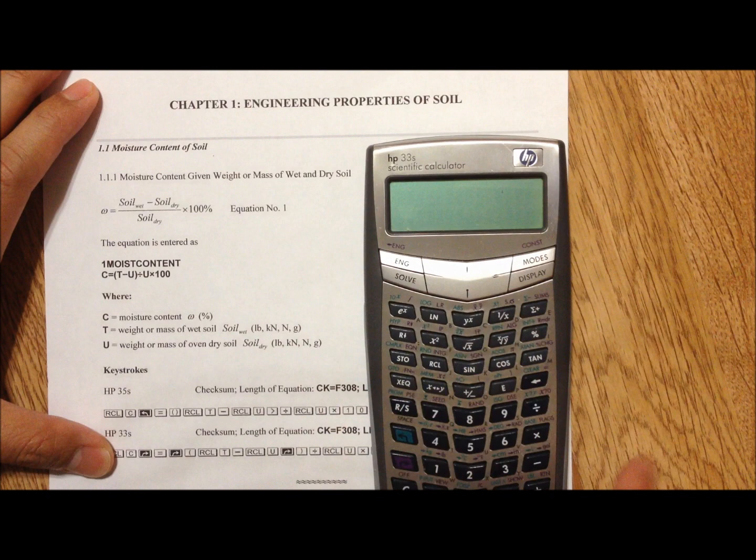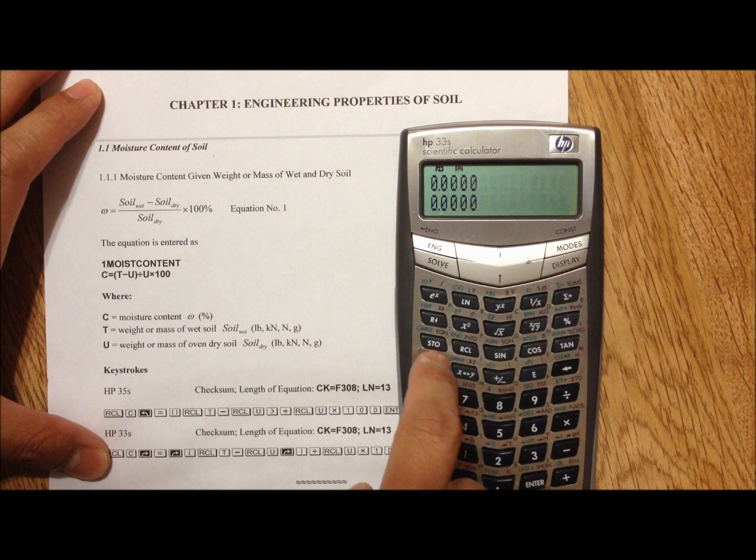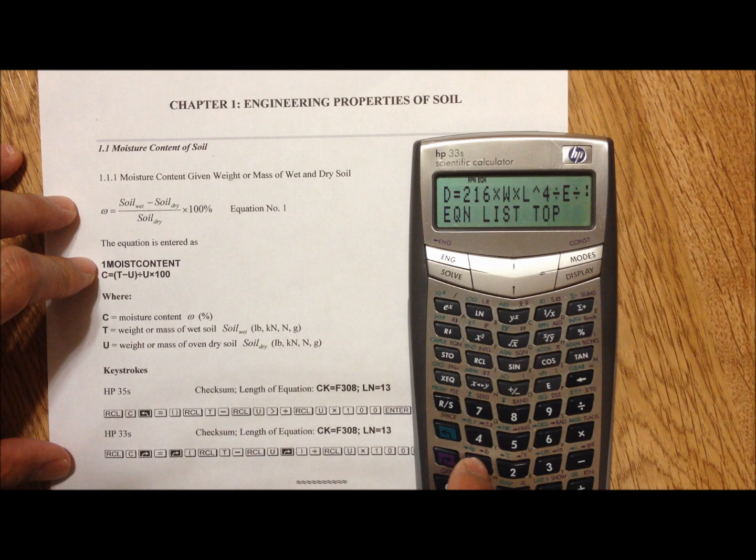For the HP-33S we do the same thing. Press C to turn on the calculator, then purple arrow and equation to go to the equation list. For equation 1, press 1, then